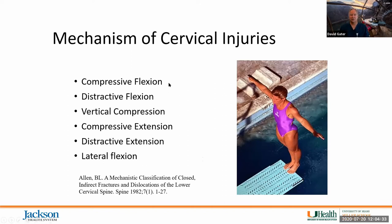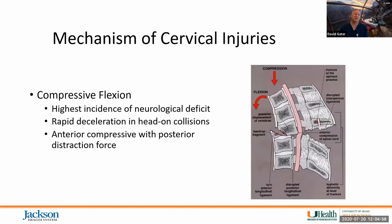We're going to talk through each of these mechanisms: compressive flexion, distractive flexion, vertical compression, compressive extension, distractive extension, and lateral flexion. I'll be running through these relatively quickly; however, you should be able to characterize these mechanisms and subsequently determine the amount of spinal instability and cord injury involved.